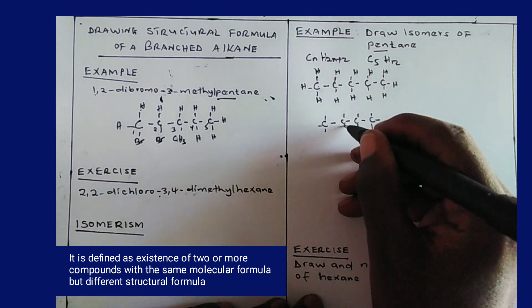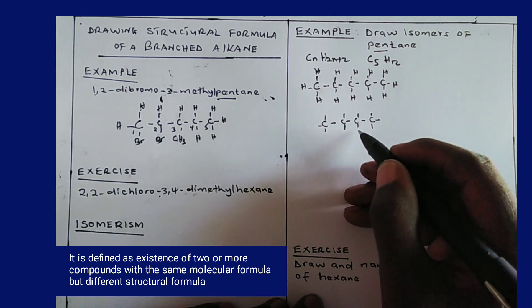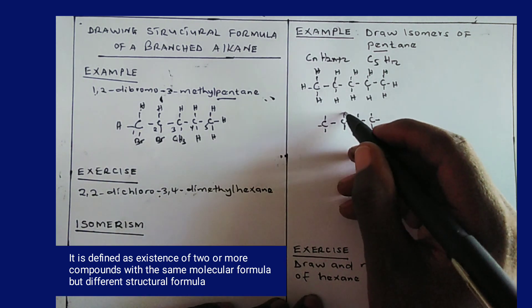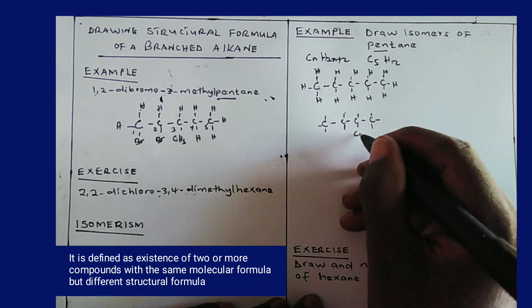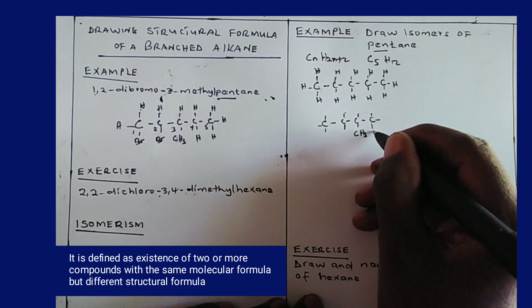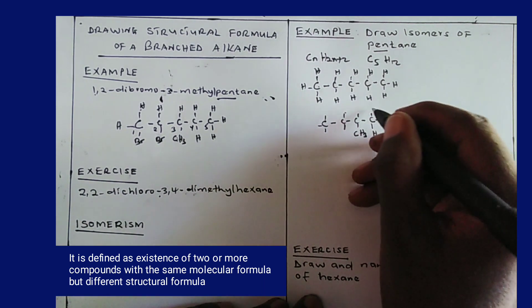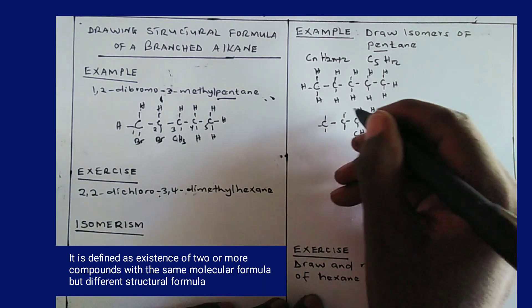Now the one I removed was a methyl branch, so I place it here, here, or here or there, so I place it here. The rest becomes hydrogen atoms.